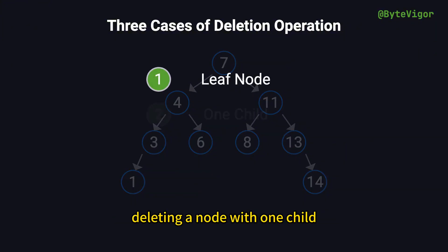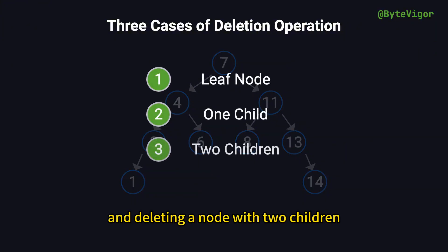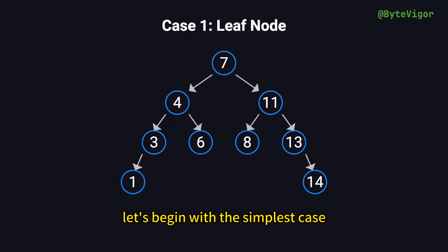The three scenarios are: deleting a leaf node, deleting a node with one child, and deleting a node with two children. Let's begin with the simplest case, deleting a leaf node. Since a leaf node has no children, removing it is straightforward. We simply disconnect it from its parent by removing the reference.